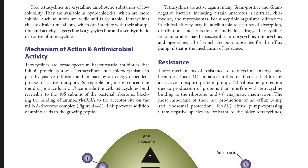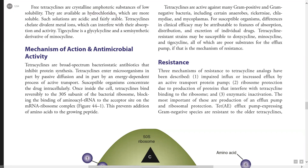Tetracyclines are crystalline amphoteric substances which have low solubility — they are not very soluble in their free state. However, their hydrochlorides are more soluble, and such solutions are acidic and fairly stable. When tetracyclines form chelates with divalent metal ions, they interfere with their absorption and activity.